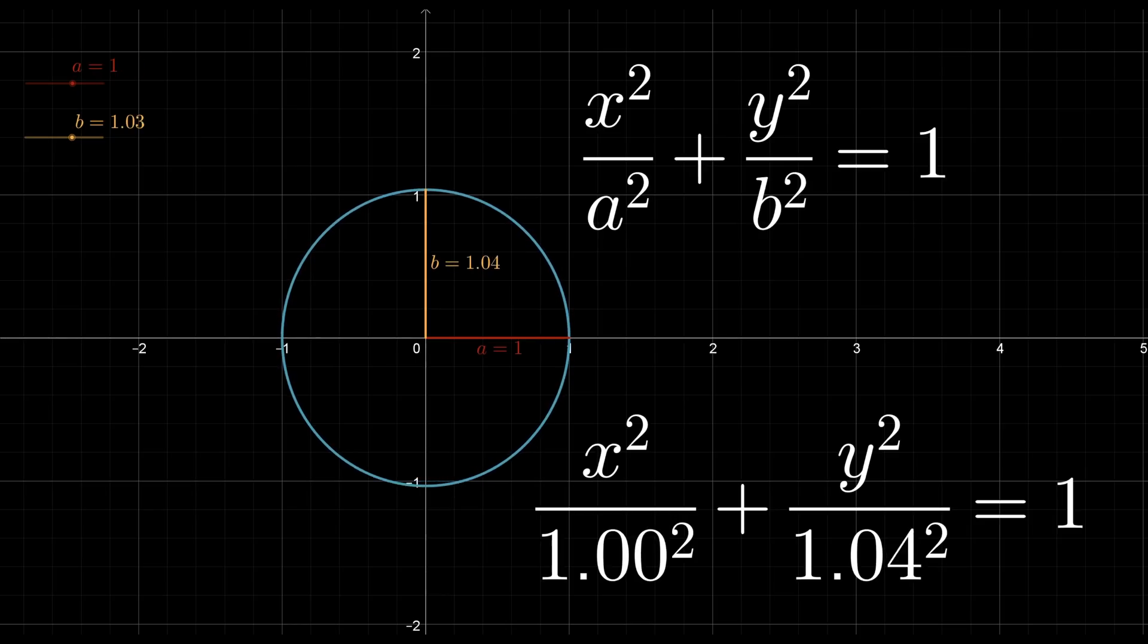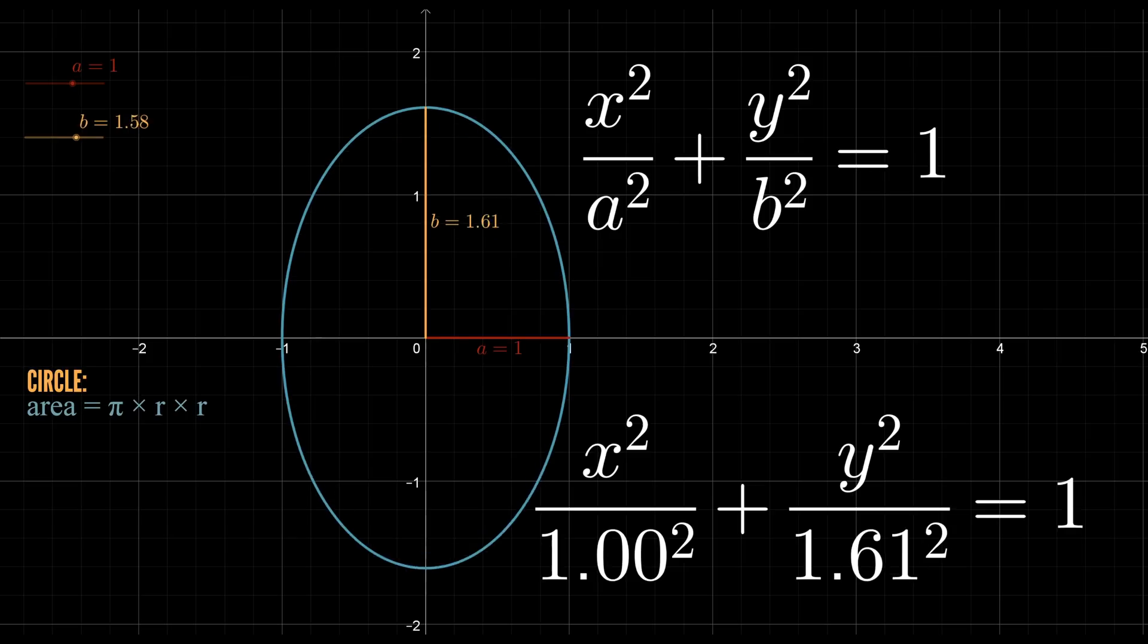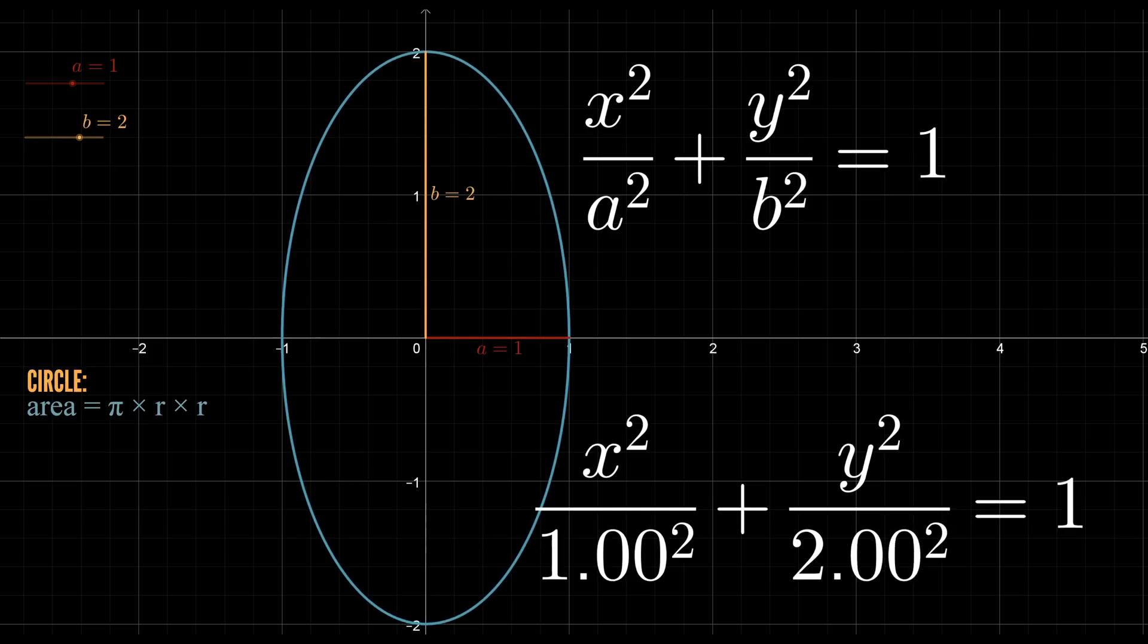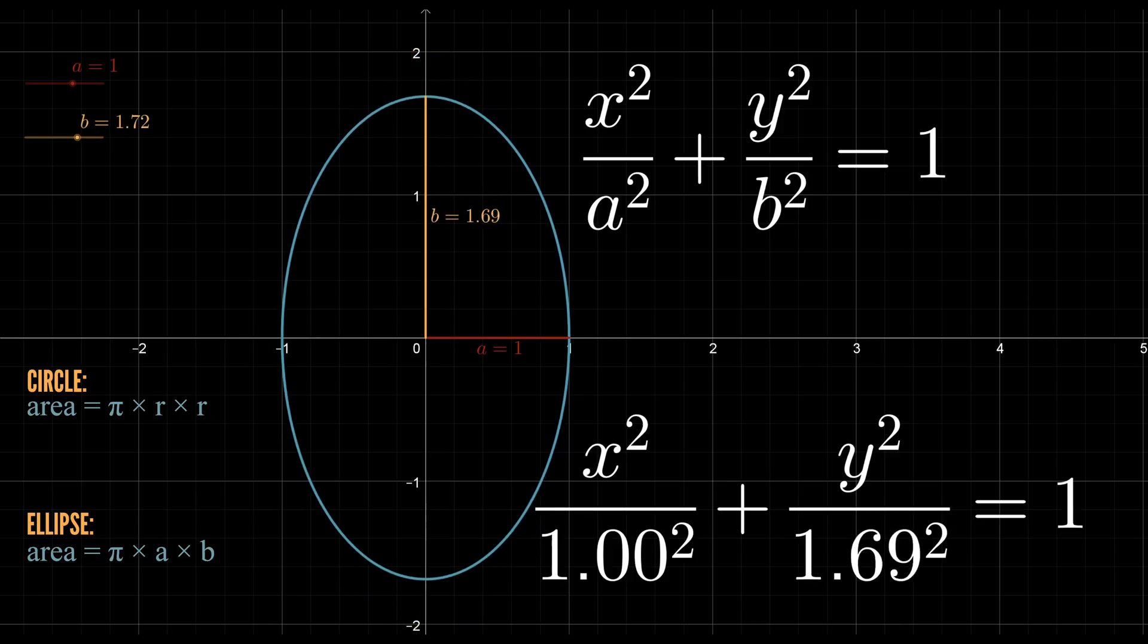And fun side fact, the area of a circle is pi r squared and the area of an ellipse is pi a times b. The circle is just the case where a equals b.